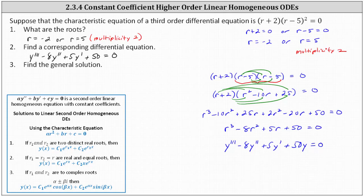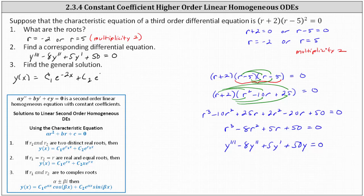Finally for number three, we're asked to find the general solution. We can use what we know about second-order equations to write the general solution to our third-order equation. The general solution is y of x equals — because we have one root of r equals negative two, we have c sub one times e to the power of negative two x. And because the root of r equals five has multiplicity two, where if we have a root with multiplicity two the general solution is c sub one e to the rx plus c sub two x e to the rx, the repeated root of five gives us plus c sub two e to the power of five x plus c sub three x e to the five x. This is the general solution.